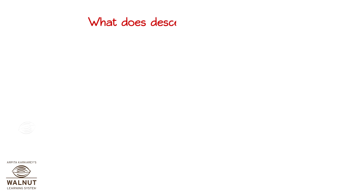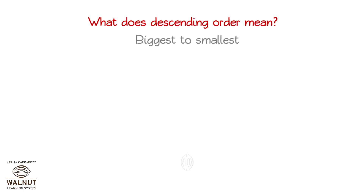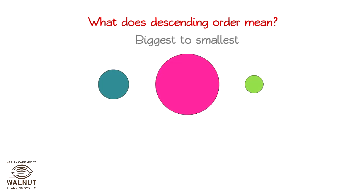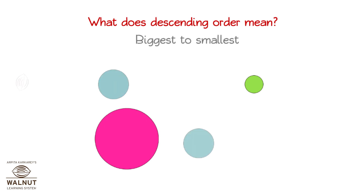What does descending order mean? Biggest to smallest. If we have to arrange these circles in descending order, we put them from biggest to smallest, like this.